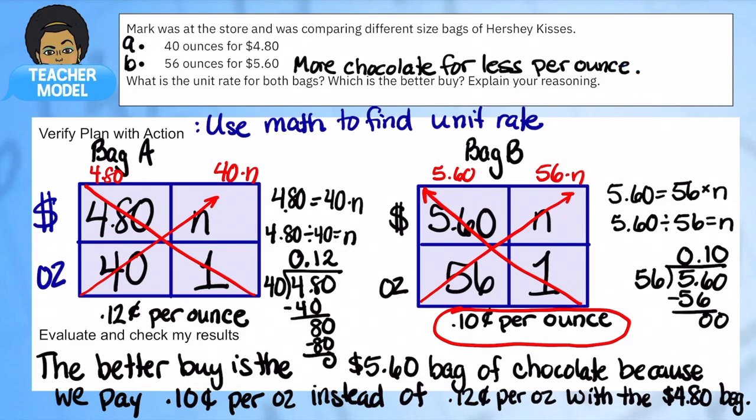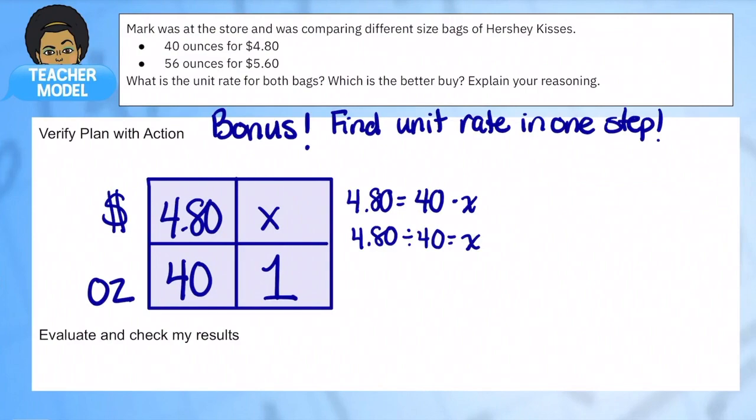I want to give you a bonus because we use math for all this, but I can actually show you how to do this one more way. I'm going to use bag A for an example where we did all this math to figure it out. There is another way we can find the unit rate without using math, and some people might be ready for it. I'm going to write the rate that we have here: I have $4.80 over 40 because this is the price per ounce.